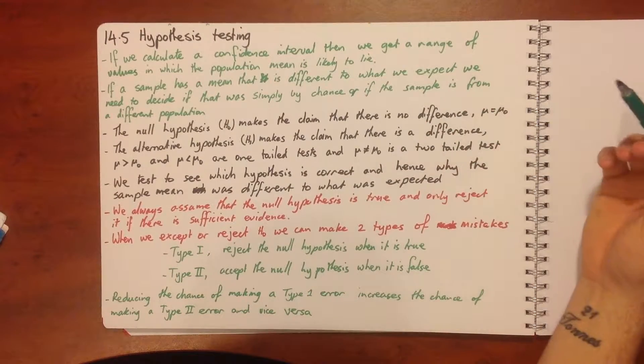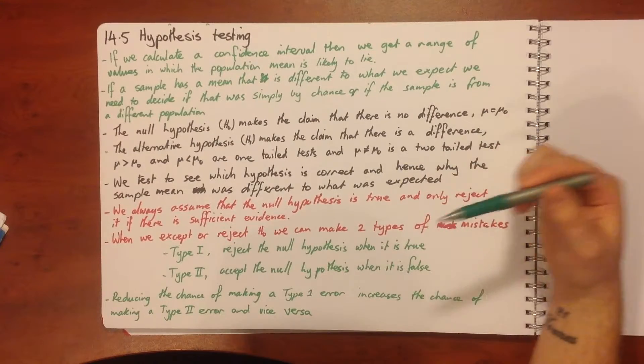we take a sample and our mean doesn't fall in that range. Is it simply that it's in that 1% chance, or is it that we've made a mistake in the first place?